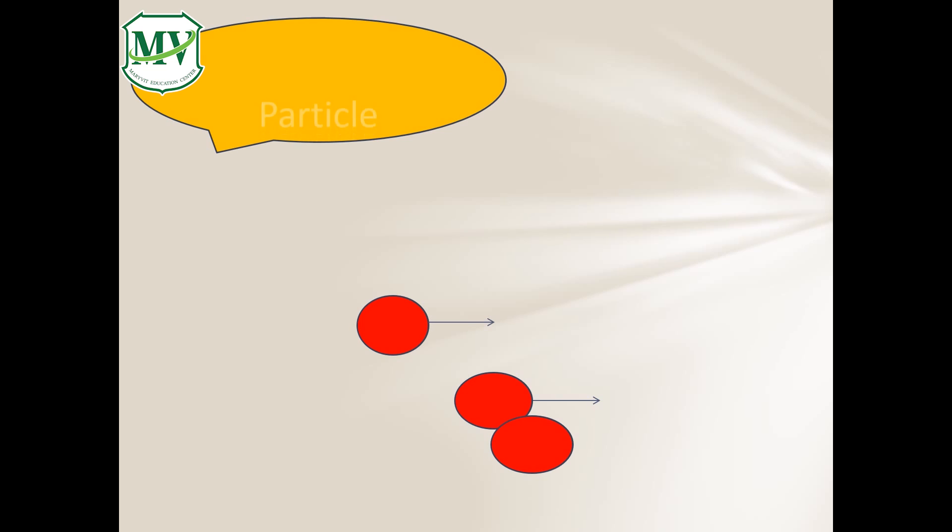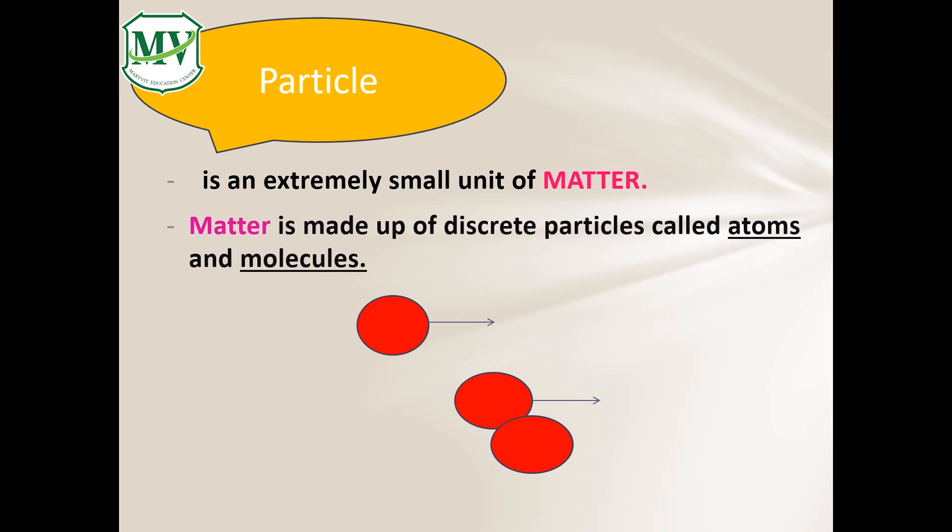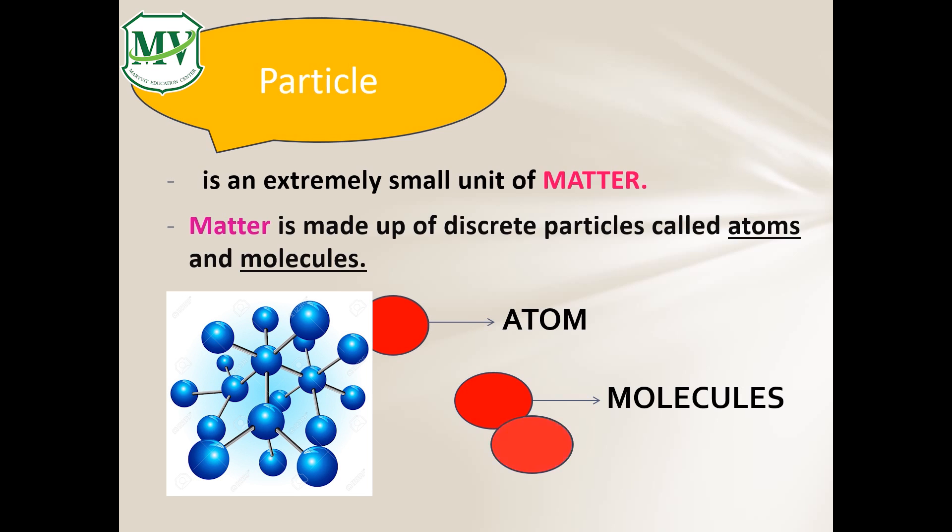Next is particle. Particle is an extremely small unit of matter. Matter is made up of discrete particles called atoms and molecules. There are spaces between these particles and are in constant atoms.